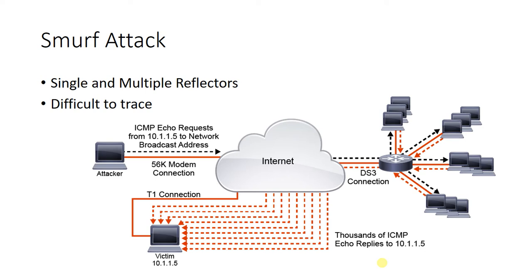The source address was spoofed — the source is the poor victim sitting down here. And all of a sudden, all of these devices are replying back to him, and he is getting thousands of ICMP echo replies coming back. So again, you can see the problem: this network is flooded, and the victim is suddenly fielding all of these responses for unsolicited ICMP messages. That is how easy it is to launch this type of attack.